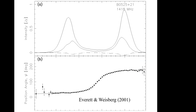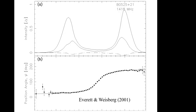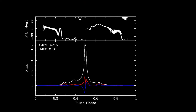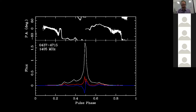The rotating vector model does a great job of describing the position angle curves for many pulsars. In the bottom plot you see measured position angles with error bars and the rotating vector model line passing through them — pretty good agreement between theory and measurement. In other cases, like PSR J0437-4715, it would be very hard to put a smooth rotating vector model sweep through the position angle curve. I think we'll wrap up there for today.